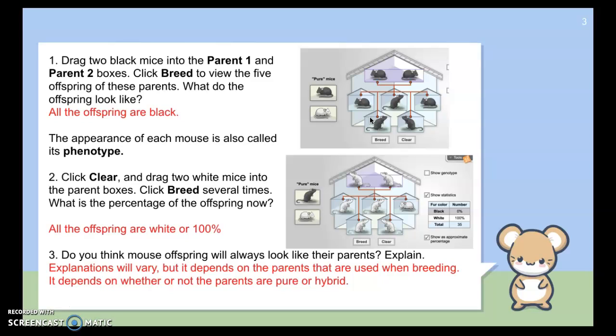Number two said clear everything out. And then it said drag two white mice. So if we were to take this parent mouse and put it in at the top and then another one, and when you bred them, you'll notice the same kind of results from up above. When you have two black parents, they produce black offspring. When you have two white mice, they produce white offspring. So all of the offspring were white.